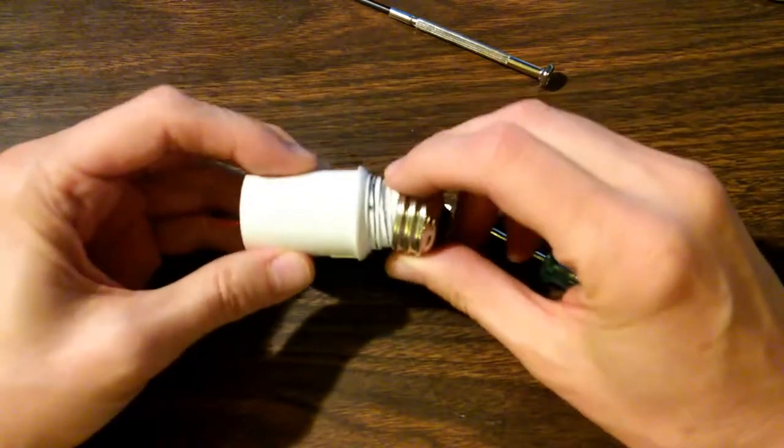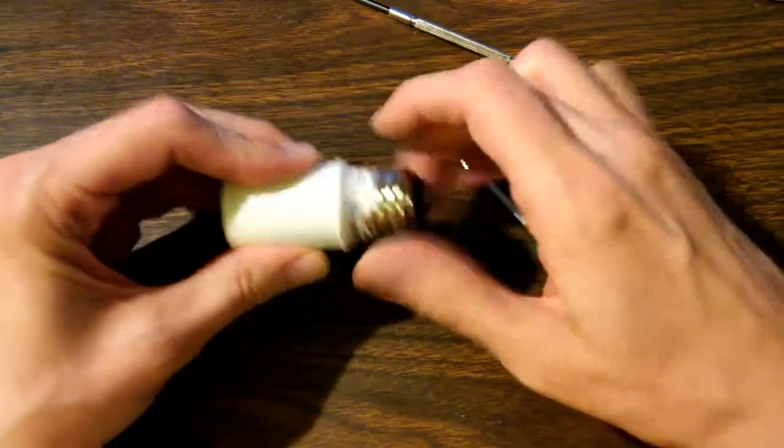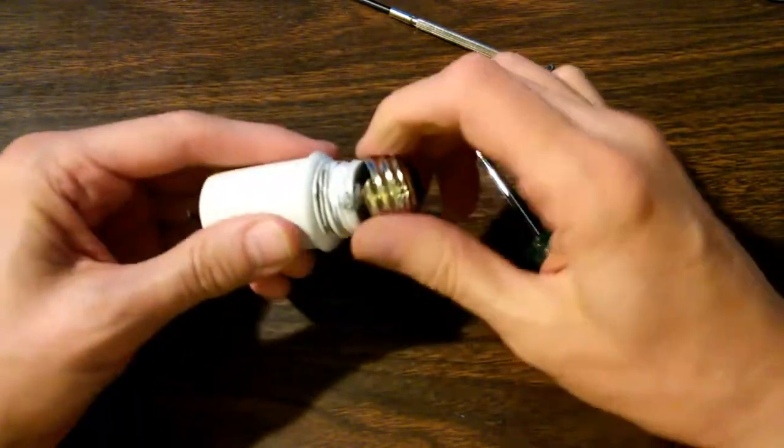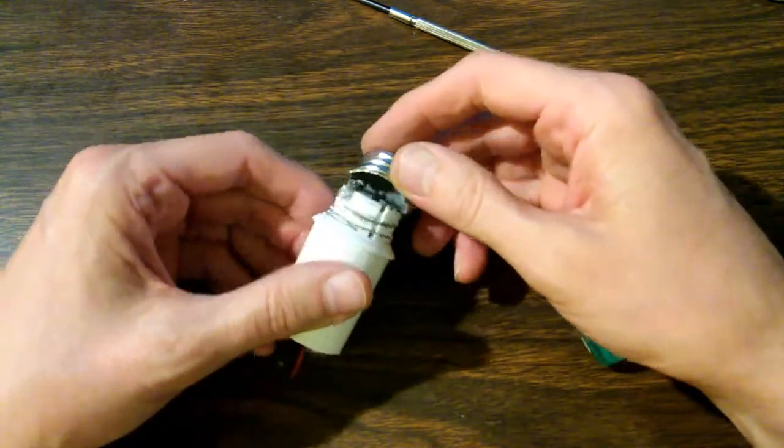I've used my Dremel tool to cut off part of the threads here, just enough so I could get a wrench on there and pull this thing apart. It is just full of this potting compound. It just embeds everything.